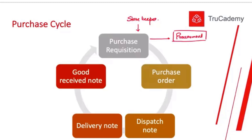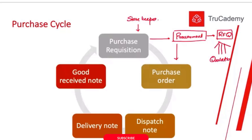If the procurement department already has suppliers, they will place a purchase order directly. But if we do not have a supplier, the procurement department will issue an RFQ — a Request for Quotations — and send this document to all potential suppliers. In return, suppliers will submit quotations, and based on those quotations, the most suitable supplier is selected and a purchase order is placed.